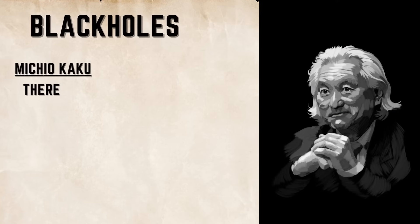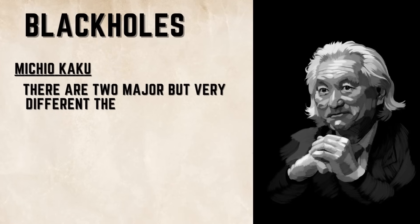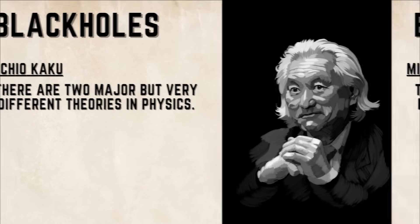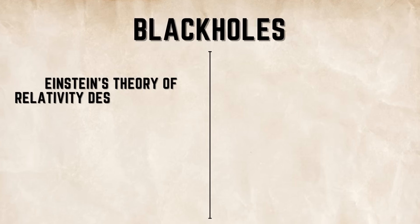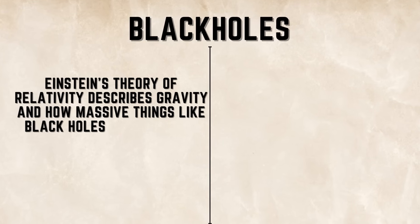Famous physicist Michio Kaku explains that there are two major but very different theories in physics. First, Einstein's theory of relativity describes gravity and how massive things like black holes and galaxies behave.